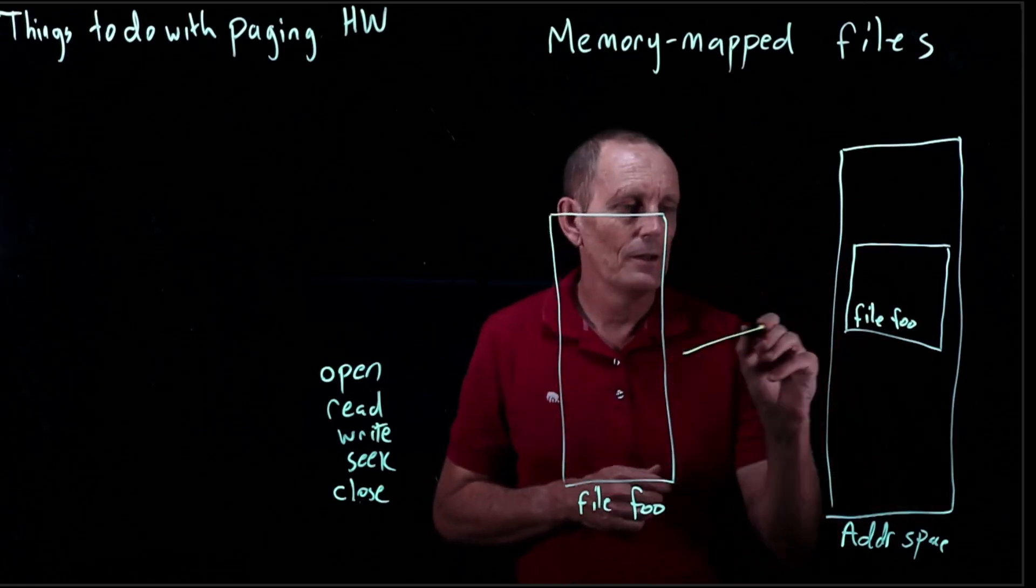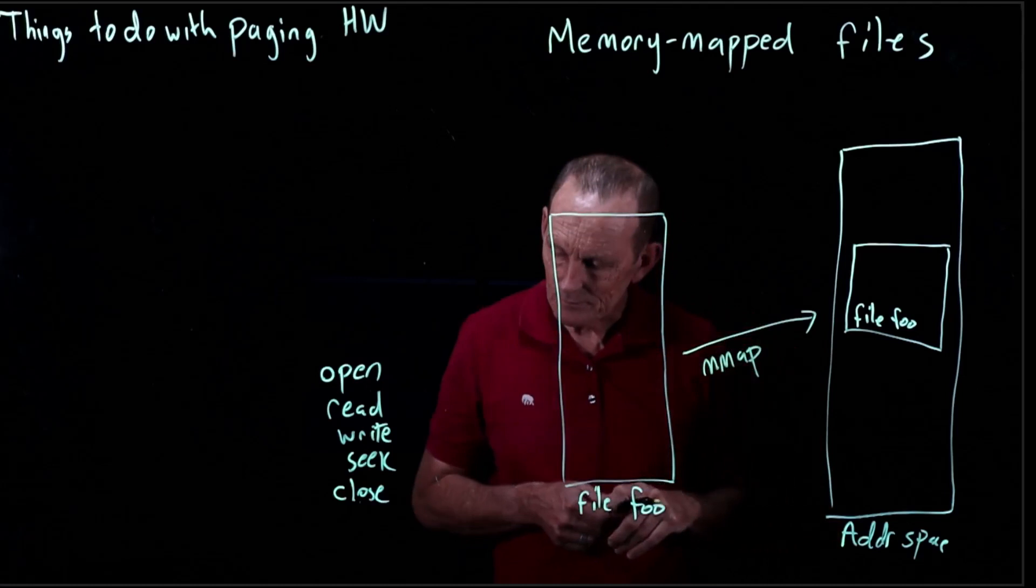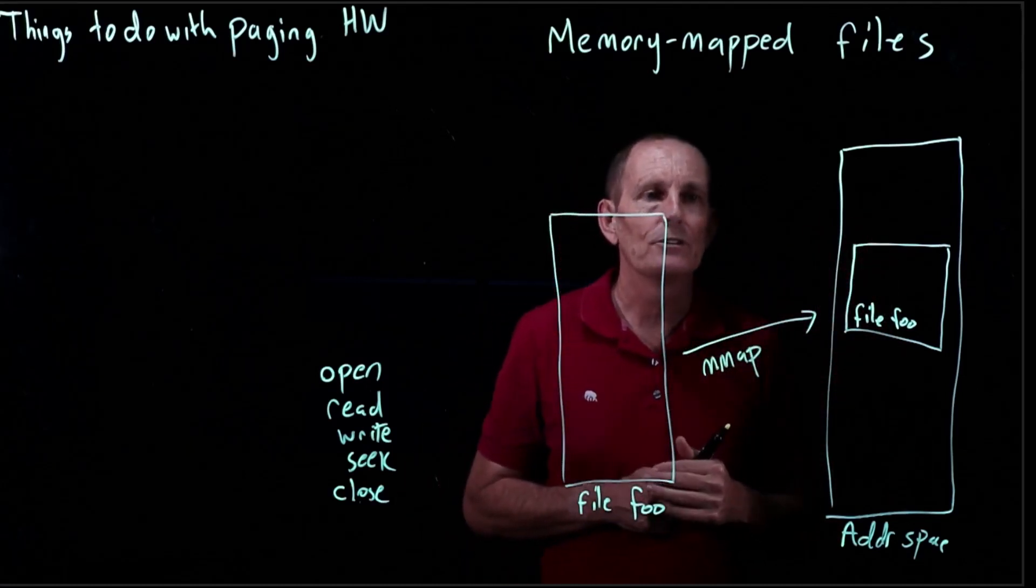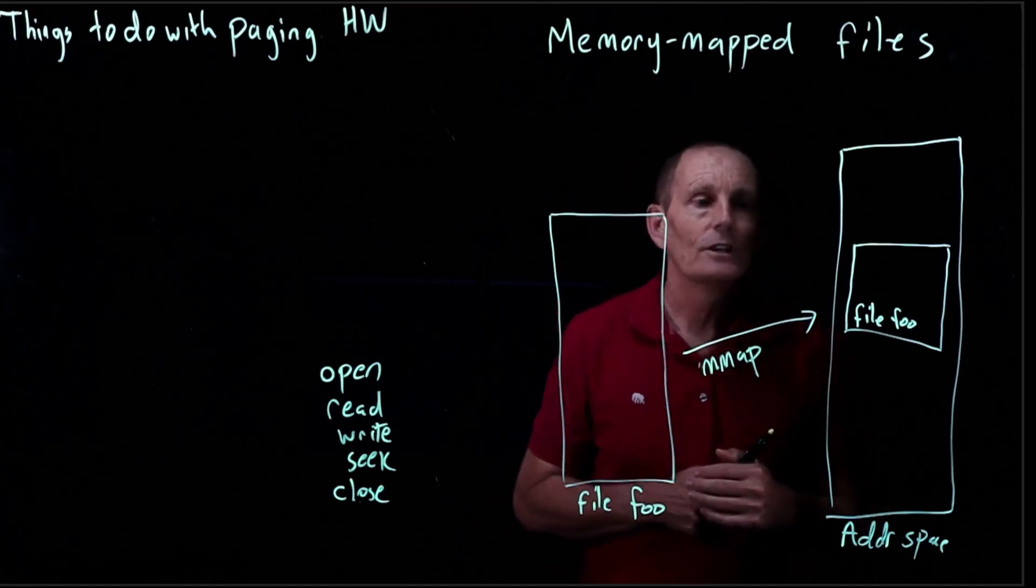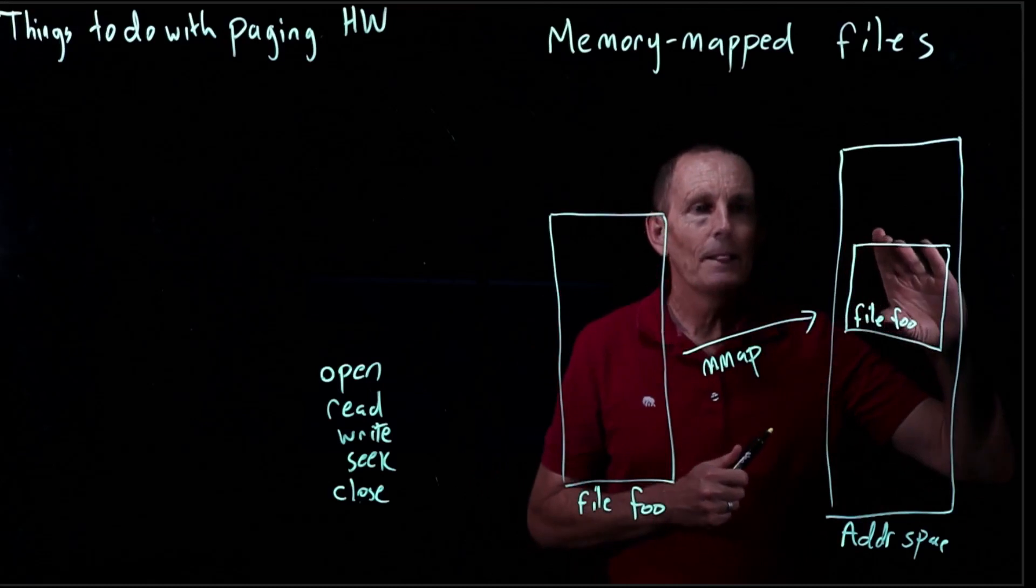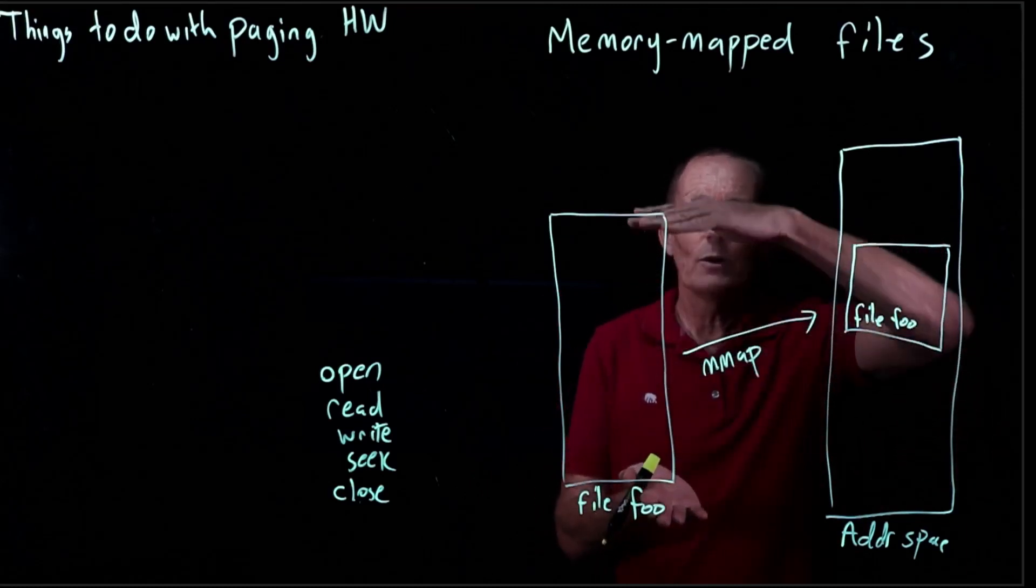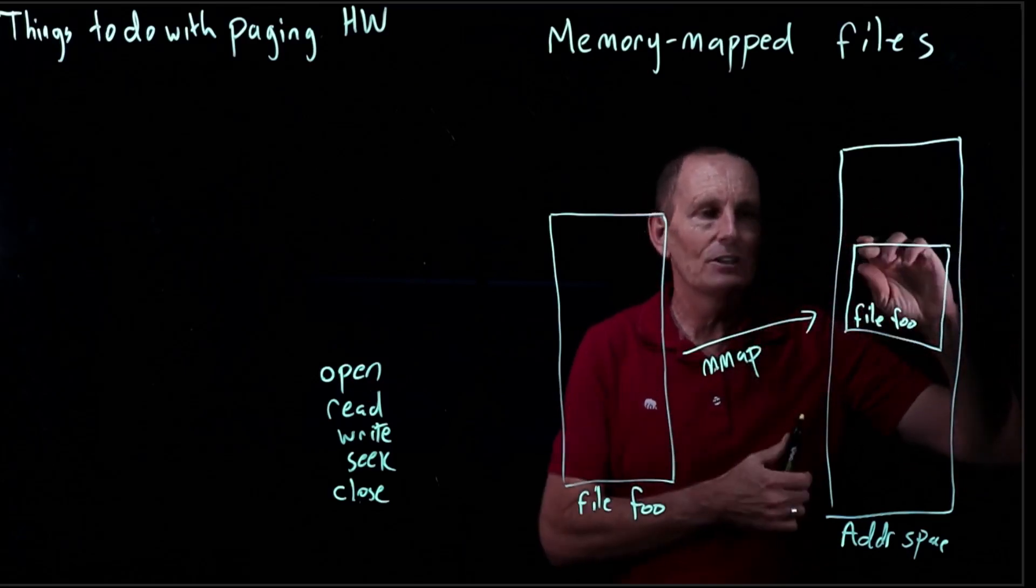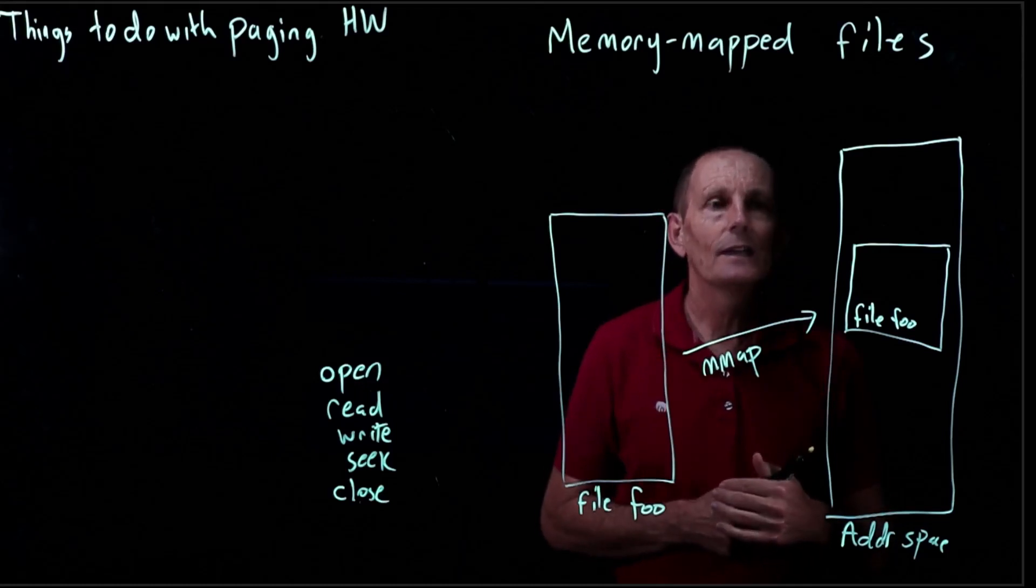So this is done with the mmap system call. The mmap takes a file and will place it at a location within your address space. The kernel, of course, has to get involved. So the kernel, when you do this mapping, is probably not going to go ahead and create physical pages for this entire address space and read all of the file from disk. Instead, you can do it on demand.